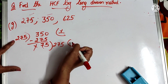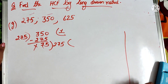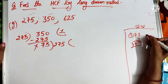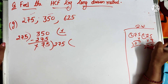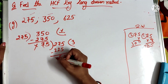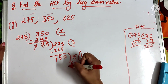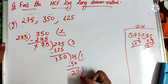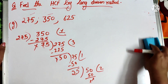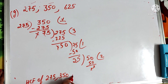Now divide 275 by 75. 75 threes are 225, so it goes by 3 giving 225. The remainder is 275 minus 225 = 50. Then divide 75 by 50: 50 ones are 50, giving remainder 25. Then divide 50 by 25: 25 twos are 50, remainder 0. The last divisor is 25. So HCF of 275 and 350 is 25.